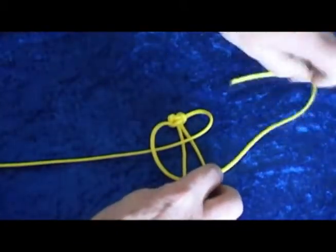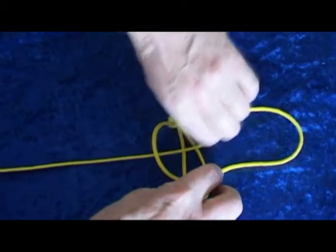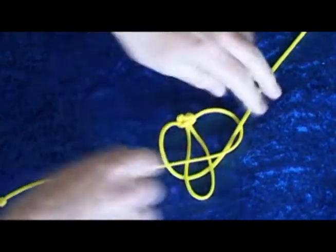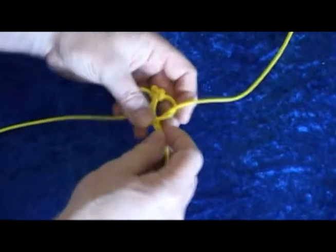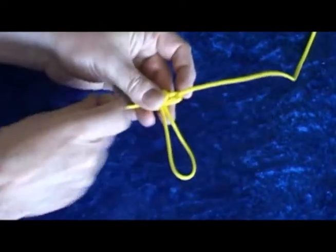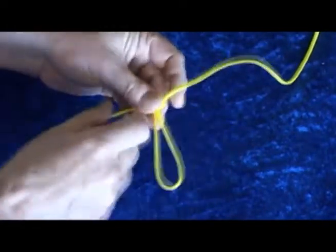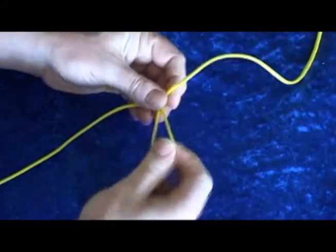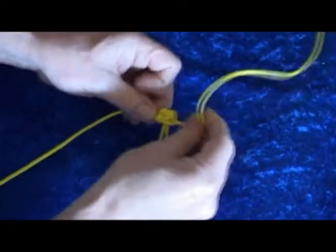Take the other end down over the knotted part, round behind the tail and up through the loop. You'll notice that I periodically tighten everything up by holding the knot and pulling on the tail.